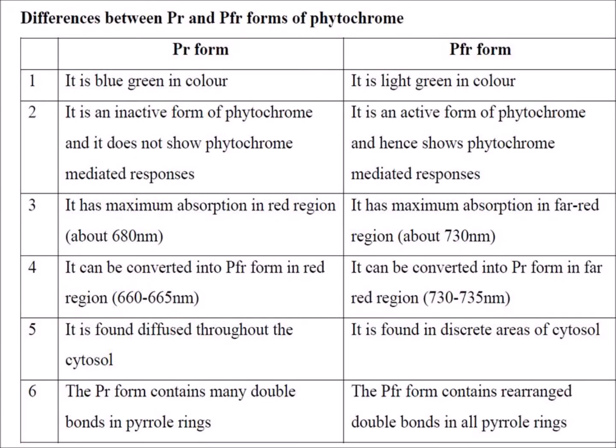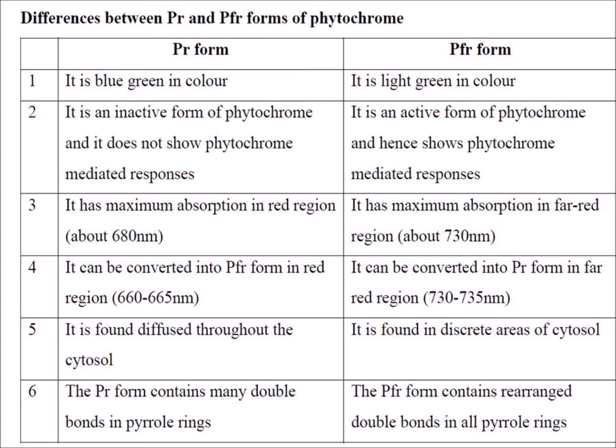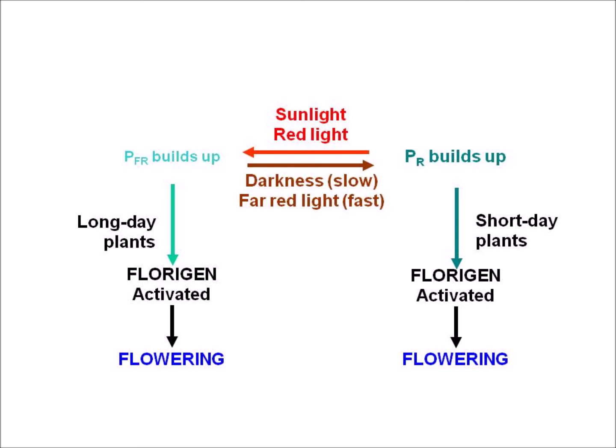Here are the differences between Pr and Pfr forms of phytochrome and the phytochrome cycle in leaves. In long day plants, when days are long and nights are short, not all of the Pfr is converted back to Pr during the night. The high amount of Pfr that remains triggers the flowering process. In short day plants, when days are short and nights are long, much of the Pfr is converted back into Pr. The low level of Pfr triggers the flowering process in short day plants.